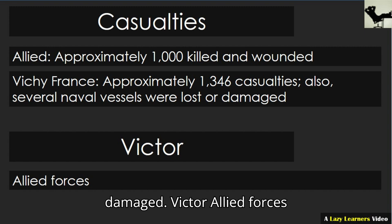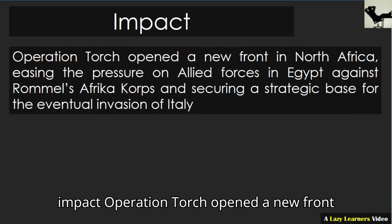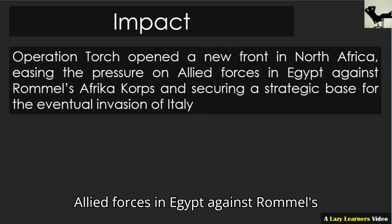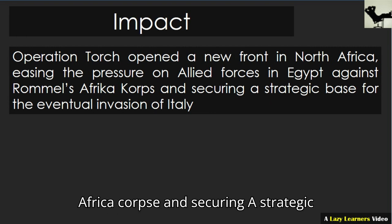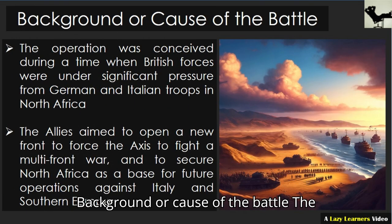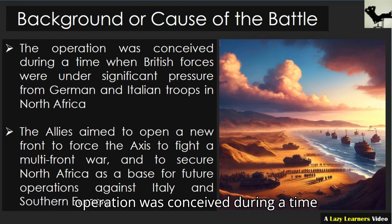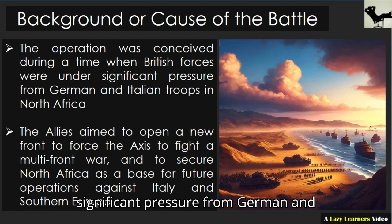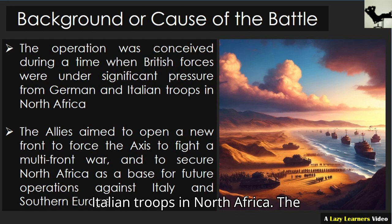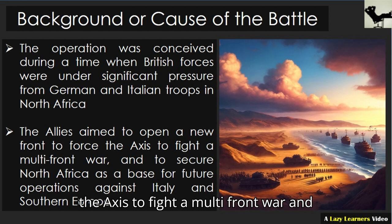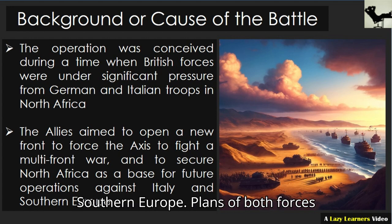Victor: Allied forces. Impact: Operation Torch opened a new front in North Africa, easing the pressure on Allied forces in Egypt against Rommel's Afrika Korps and securing a strategic base for the eventual invasion of Italy. Background and cause of the battle: the operation was conceived during a time when British forces were under significant pressure from German and Italian troops in North Africa. The Allies aimed to open a new front to force the Axis to fight a multi-front war and to secure North Africa as a base for future operations against Italy and Southern Europe.